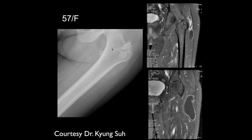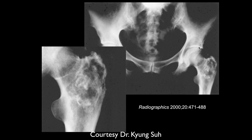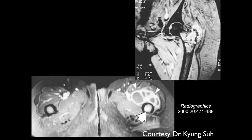Cortical irregularity along the left greater trochanter on X-ray. On MRI, cortical irregularity and a rim-enhancing fluid collection adjacent to the left greater trochanter are seen, concerning for abscess. There is focal osseous erosion within the greater trochanter with fluid extending into adjacent subcutaneous tissues — consistent with both intraosseous and soft tissue abscess.